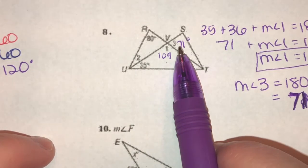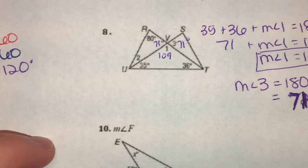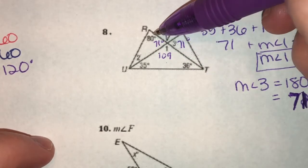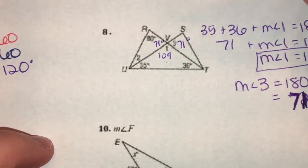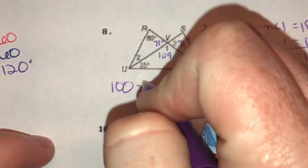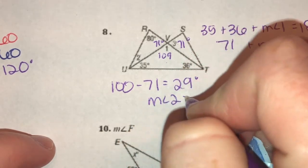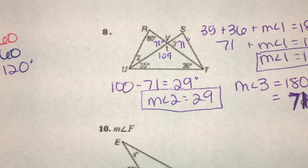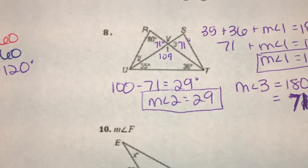Lastly, angle two. Once I know this is 71 degrees and this is vertical, this one also has to be 71 degrees. These three have to add up to 180 — this angle is 80, so these two have to add up to 100. 71 plus what equals 100? 100 minus 71 equals 29. So the measure of angle two equals 29 degrees. Once you know angle relationships and that all three add up to 180, there are different ways of finding angle measures.